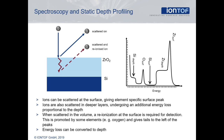The element-specific energy loss is the same, but depending on the depth, additional energy is lost. This forms the low-energy tails to the left of the peaks, corresponding to the in-depth distribution of the element — for example, marked by zirconium depth in the shown figure.